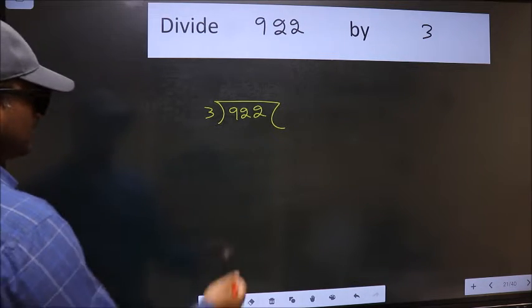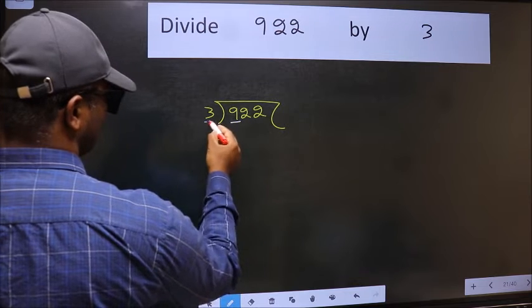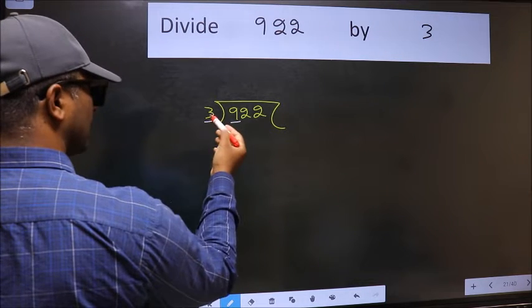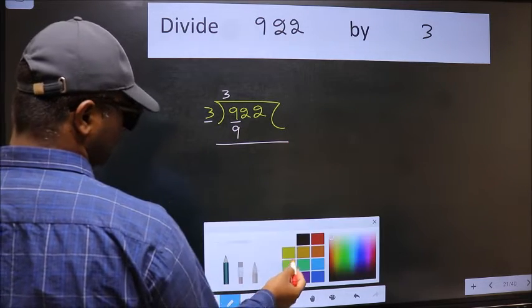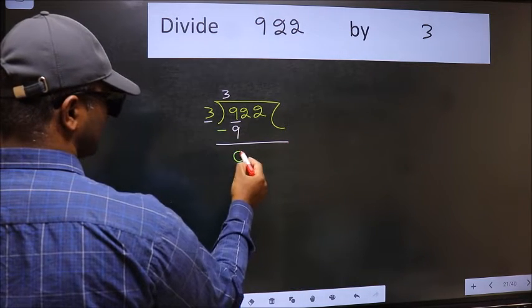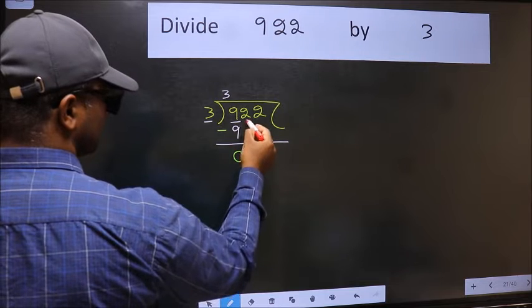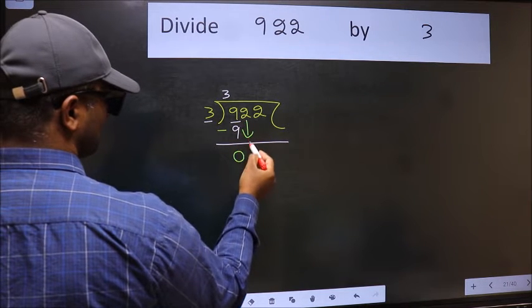Next. Here we have 9 and here 3. When do we get 9 in 3 table? 3×3 is 9. Now we should subtract. We get 0. After this bring down the beside number. So 2 down.